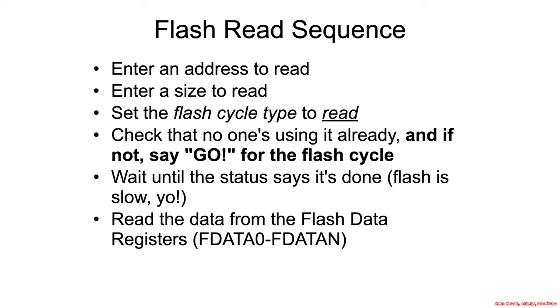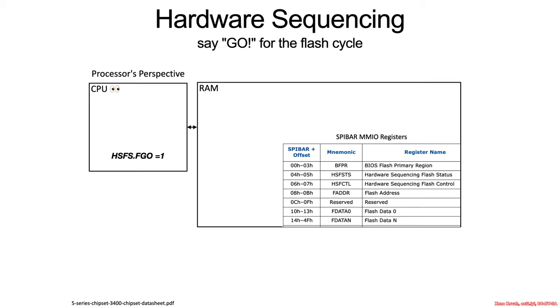If not, say go for the flash cycle to go — hardware sequencing flash status register FGO equals 1.